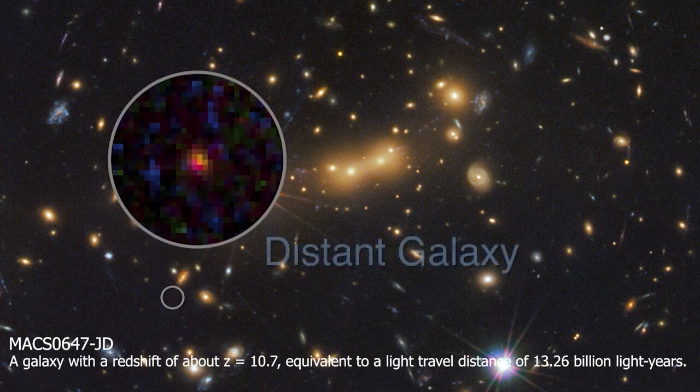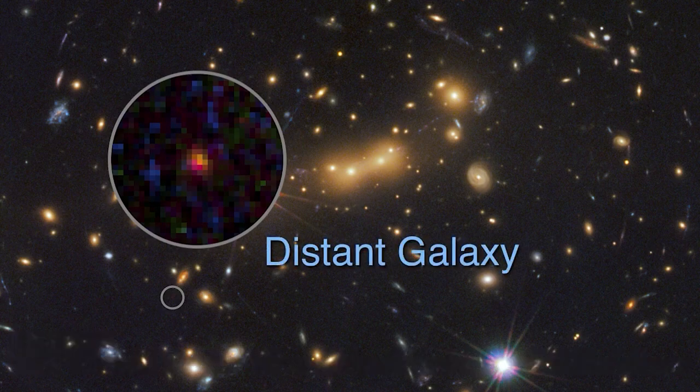Located at redshift 11, or 97% of the way back to the Big Bang. With Hubble, it was just this pale, red dot that we could see. It was incredibly small, just a tiny galaxy in the first 400 million years of the cosmos.